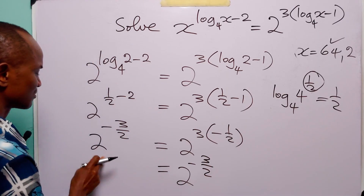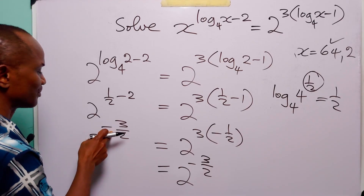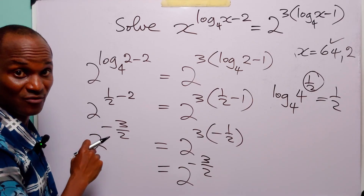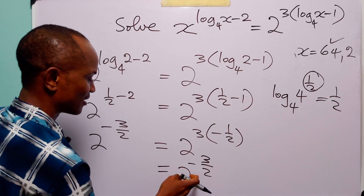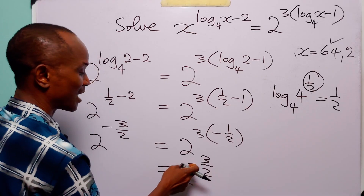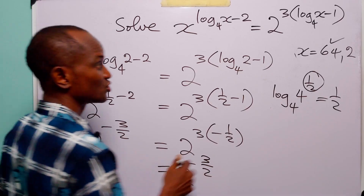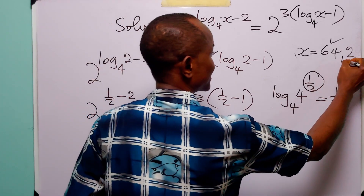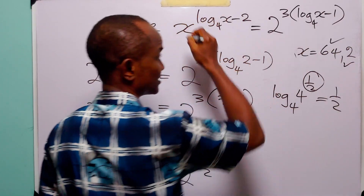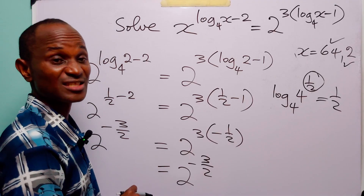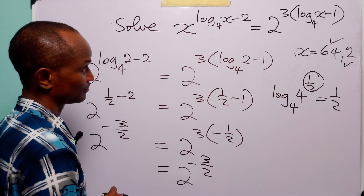And on the right hand side, we have 2 to the power 3 times half minus 1, which is 2 to the power 3 over 2 minus 1, that is 2 to the power minus half. So this gives 2 to the power minus 3 over 2. You can see that on the left hand side we have 2 to the power minus 3 over 2, and on the right hand side we also have 2 to the power minus 3 over 2. So x equal to 2 also satisfies this exponential equation.